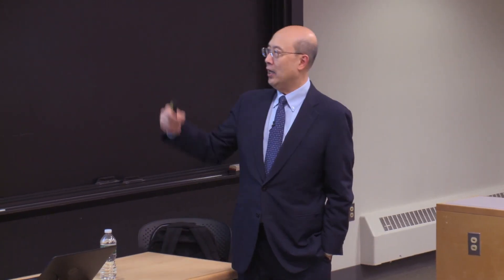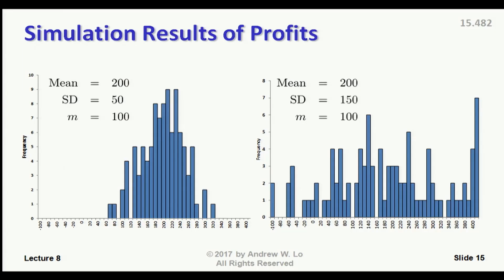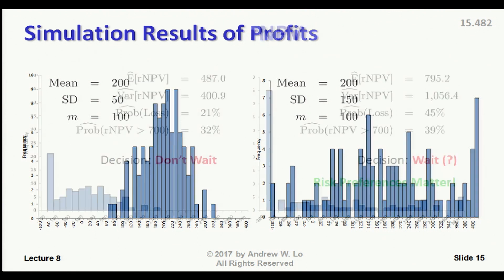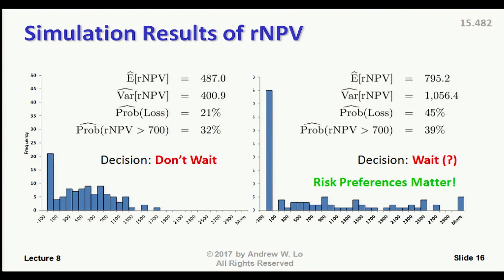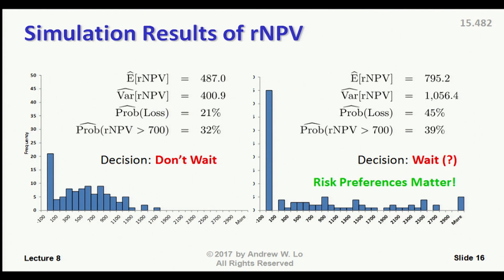If we plug in those 100 random variables, this is what we get — the distribution of risk-adjusted NPV. That's the histogram. The mean is $200 million and the standard deviation is $50 million, with 100 trials. The left panel shows the actual x values being simulated, and the right panel shows the actual risk-adjusted NPV. The expected risk-adjusted NPV is $487 million.